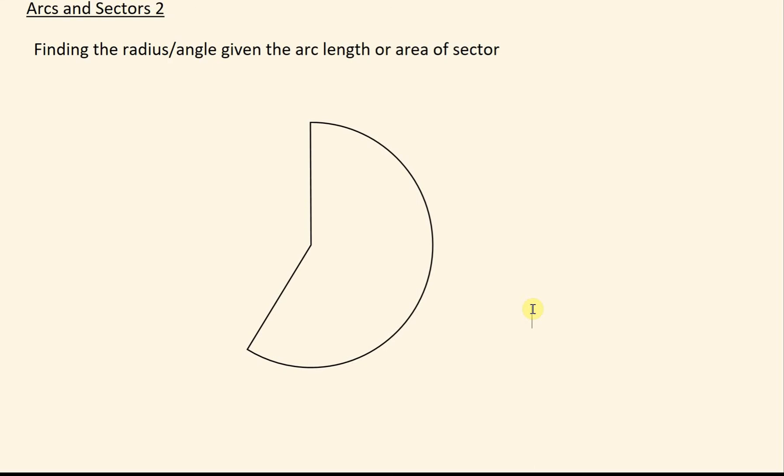Hi, in this video we're going to look at arcs and sectors. In particular, we're going to look at finding the radius or angle given the arc length or sector. So the question you might see: you might be told that this length is 20cm, this angle is 200 degrees, and you need to find what the radius is going to be. You have to go backwards.